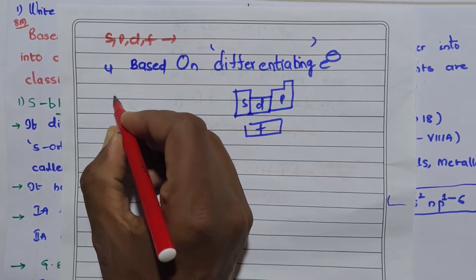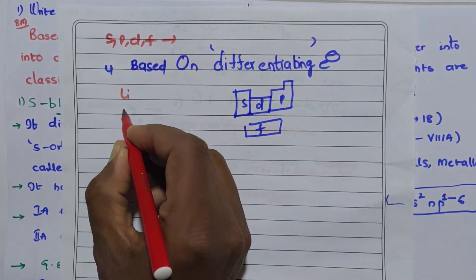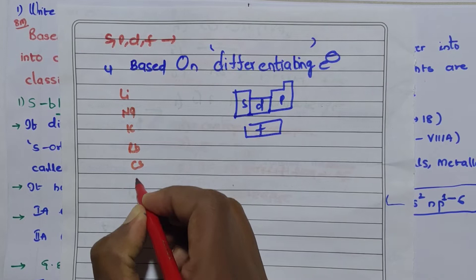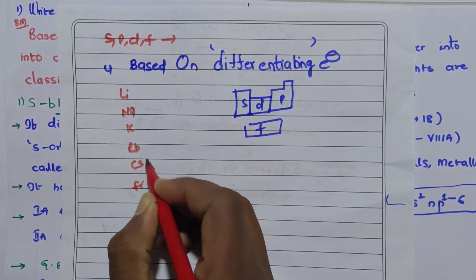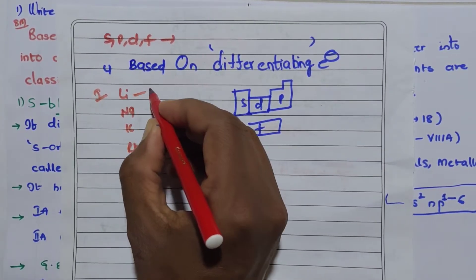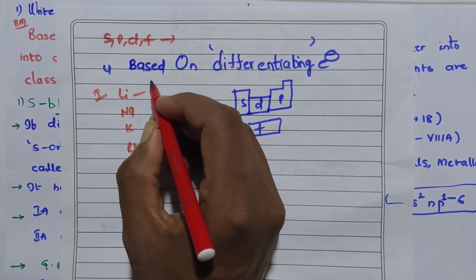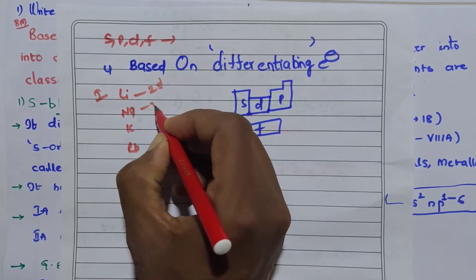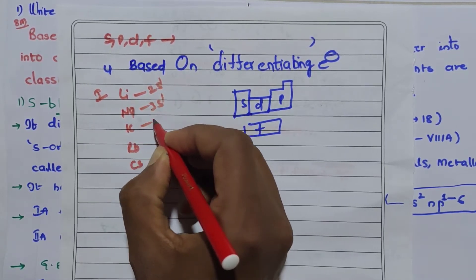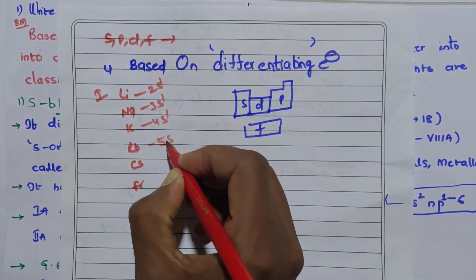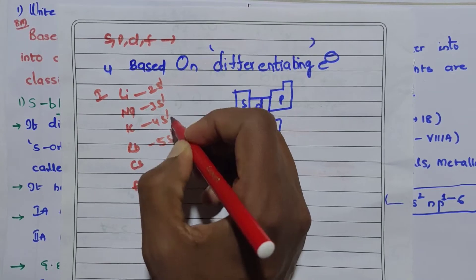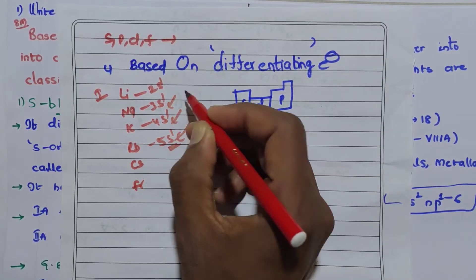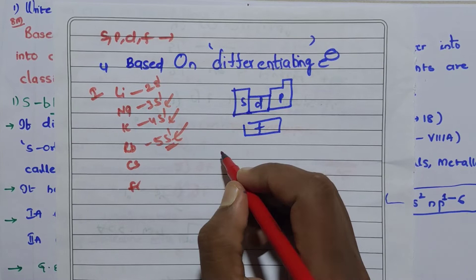All of you know the first group: lithium, sodium, potassium, rubidium, cesium, francium. In this group, the last valency shell electrons are 2s1, 3s1, 4s1, 5s1. In all of these, the last incoming electron enters into the s orbital only. That is why these elements are placed in the first group.